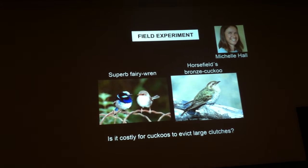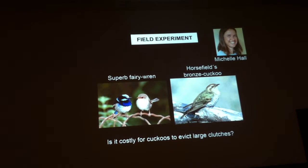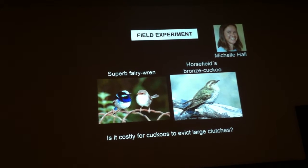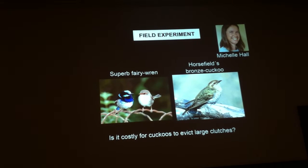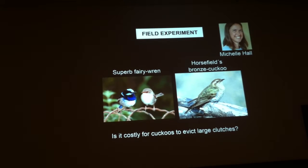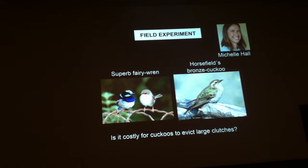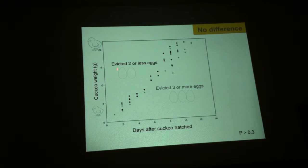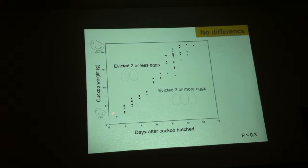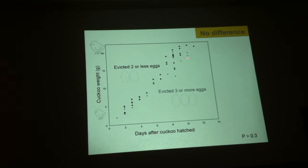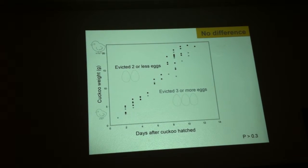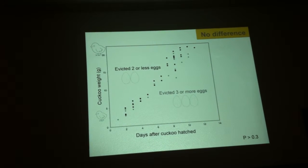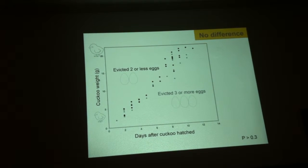We wanted to test whether it was costly for cuckoos to evict larger clutches. Using a field experiment with Michelle Hall of the University of Melbourne, we used the system of the Superb Fairy-wren, which is the main host of the Horsfield's Bronze-Cuckoo in Australia, and we experimentally changed the number of eggs in the nest. We measured the growth rate of the cuckoo chicks. In black you see the growth rate of cuckoos that evicted two or fewer eggs, and in grey the ones that evicted three or more eggs, and we see that there is no difference. So for these tiny little birds it is exactly the same to evict one egg or five eggs, because cuckoo chicks are strong enough to even evict hatched chicks from the nest.